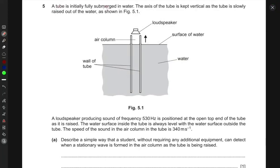We have a question: a tube is initially fully submerged in water. The axis of the tube is kept vertical as the tube is slowly raised out of the water, and here we can see it in a diagram.